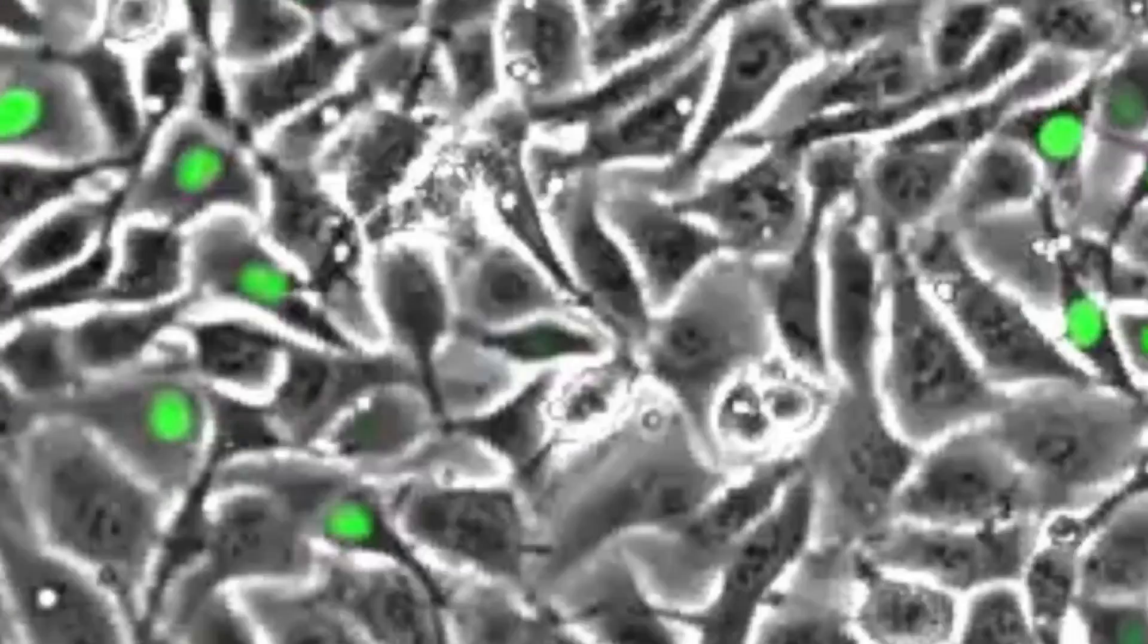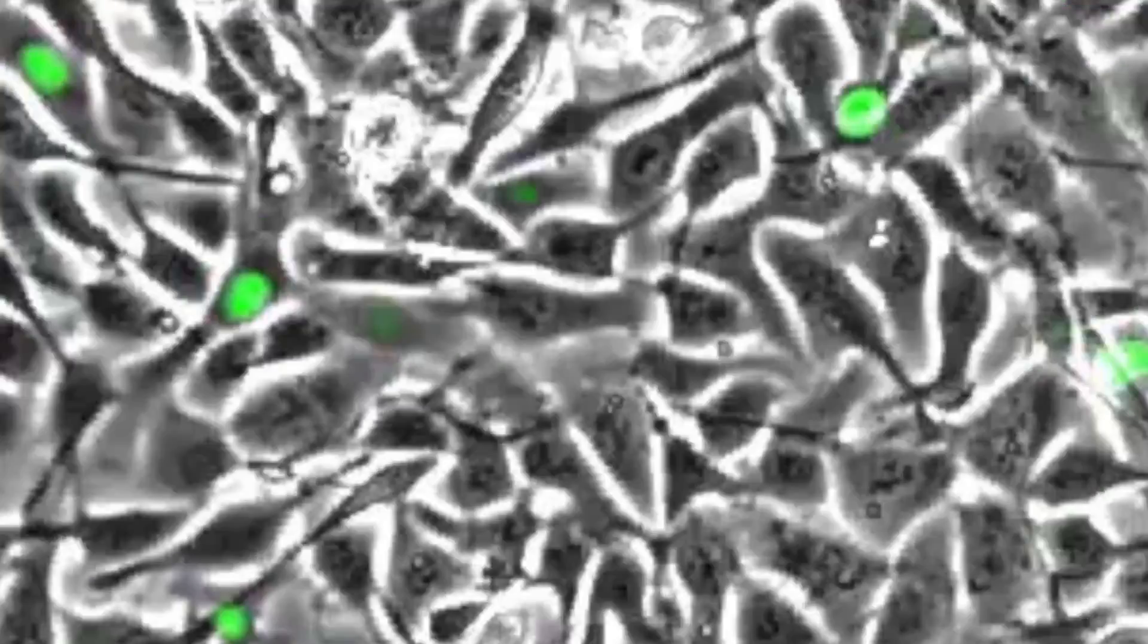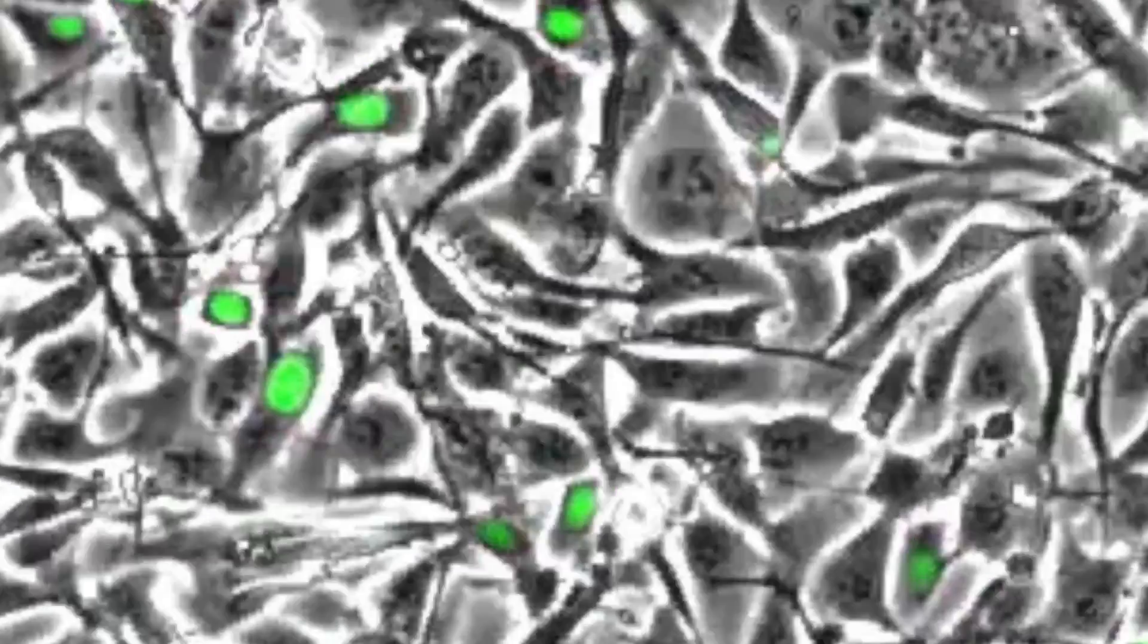The researchers found that the cells give themselves the green light to move by breaking down a molecule called lysophosphatidic acid, or LPA for short, that's found in their surroundings.